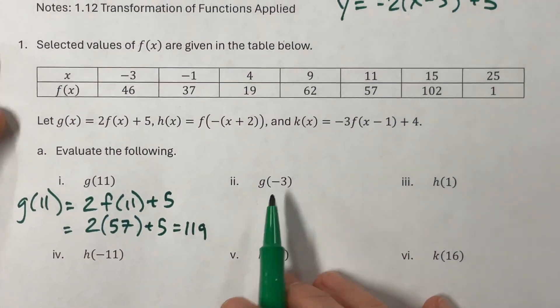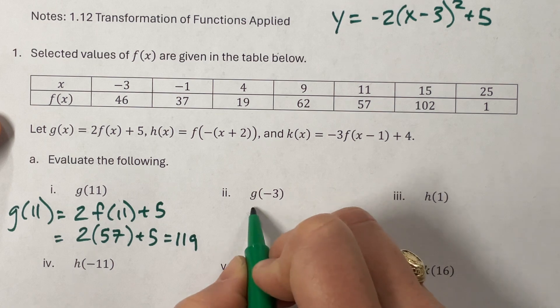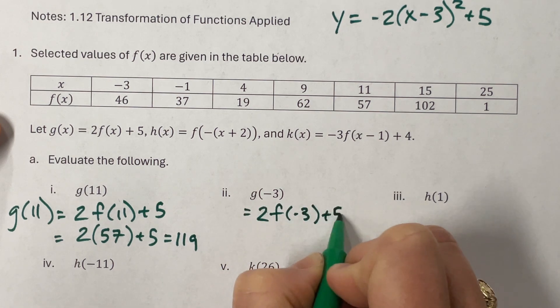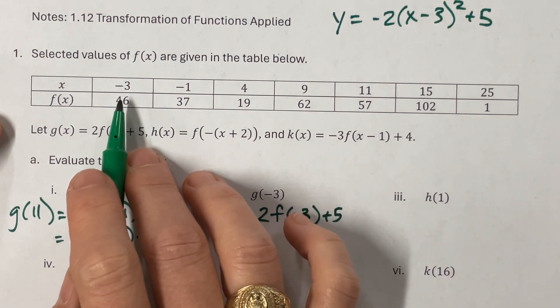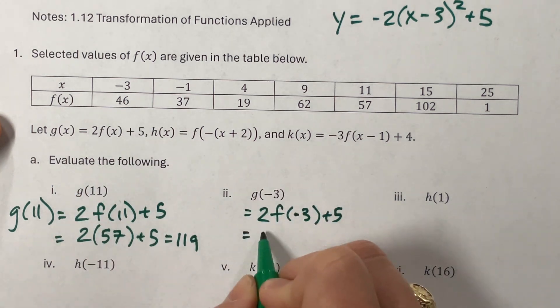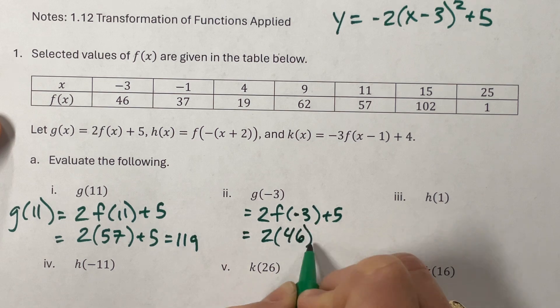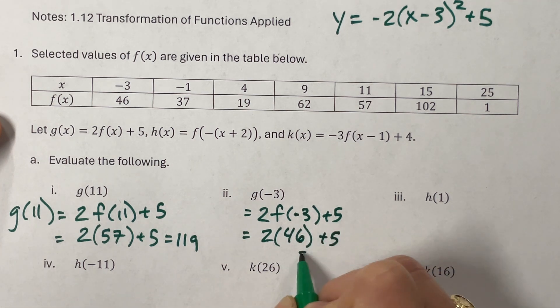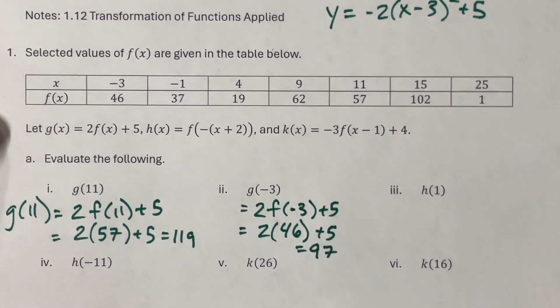The next one, G of negative 3, same idea. This would be equal to 2 times F of negative 3 plus 5. And so negative 3 is right here. Oh, another annoying number. 2 times 46. I think 2 times 45 is 90, so 92 plus 5 is equal to 97.